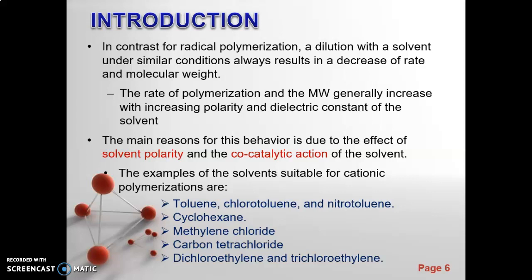The main differences between radical and ionic polymerization: the rate of polymerization and molecular weight generally increase with increasing polarity and dielectric constant of the solvent. So solvent plays an important role in these types of polymerization. The main reason for this behavior is due to the effect of solvent polarity and the co-catalytic action of the solvent. Examples of solvents used are toluene, chlorotoluene, nitrotoluene, and so on.